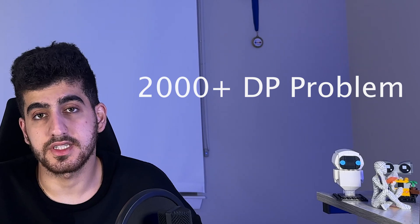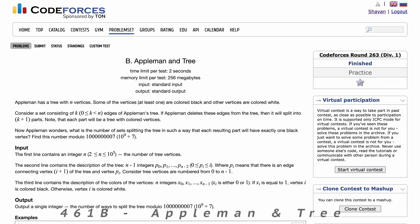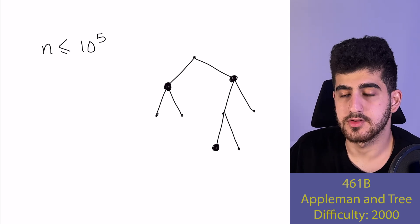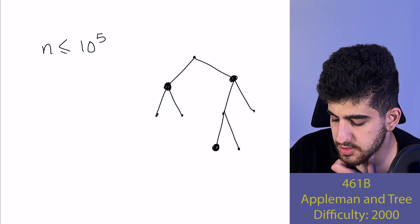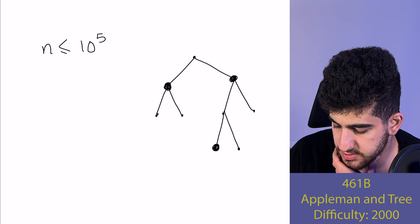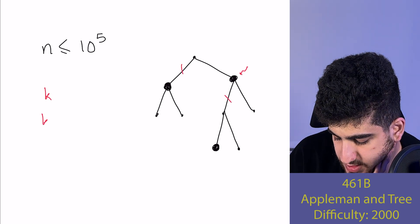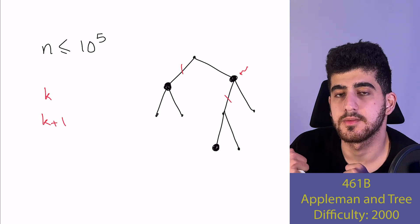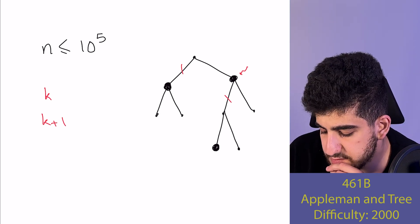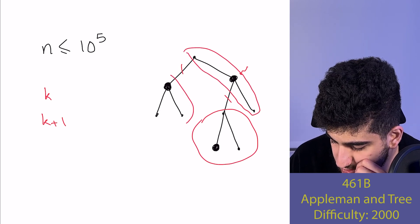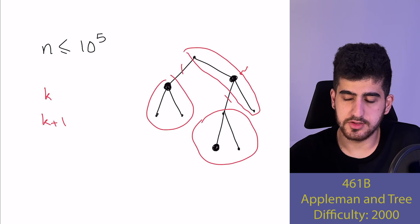Hey guys, this is Shayan. In this video from the DP playlist, I will solve another 2000+ problem on Codeforces: Appleman and Tree, 461B. This problem states that we have a tree of n vertices (n up to 10^5). Some vertices are black and some are white. If we remove k edges, we get k+1 connected components. We want to remove k edges such that all remaining components have exactly one black vertex — and count the number of ways to do that.